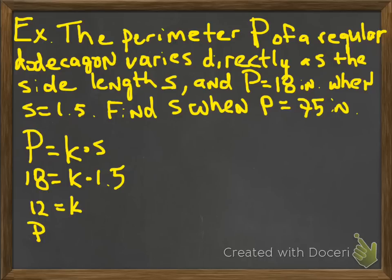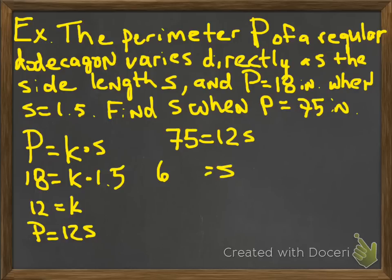Then you can divide 18 by 1.5, and you get 12. Okay, so that's the k. Put that back into the function, 12s, and then read the question. It says find s when p is equal to 75 inches. So instead of a 75, I'm going to put the p in its place, or 75 in place of p, sorry. So now I'm saying 75 is equal to 12s. Divide 75 by 12, and you get s is equal to 6.25 inches. And again, if you have any questions, make sure you're making note of this on your notes, so that way you can ask me on Monday.